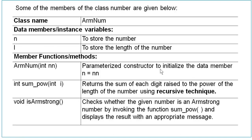Now we are going to check the class definition and description. Some of the members of the class are given below. The class name is ArmNum. We have some data members: N to store the number, and L to store the length of the number. You have to find the length of the number every time according to the input.